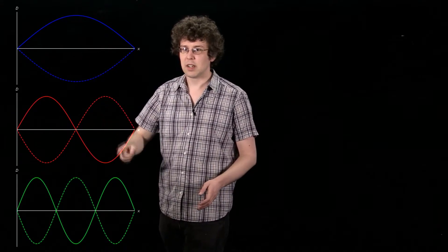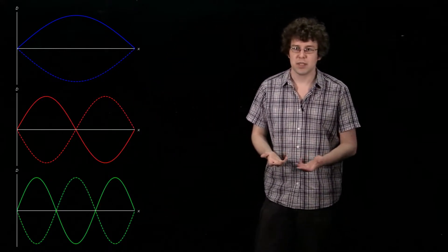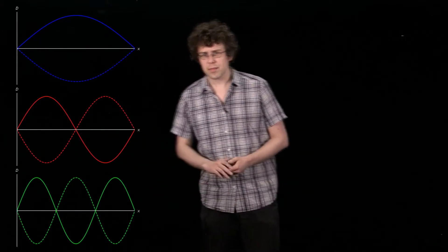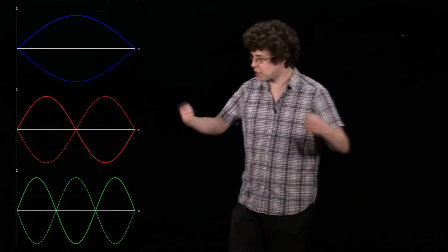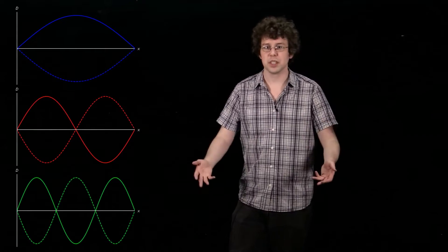The points in between, so here, the points of maximal displacement, here or here, are called antinodes. They're just the exact opposite of a node. So you can see with the three standing waves that I set up, I had to move. The first oscillation was quite gentle. The second oscillation was a bit faster. The third oscillation was faster again.